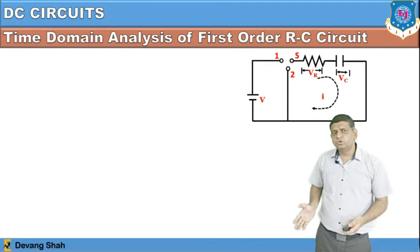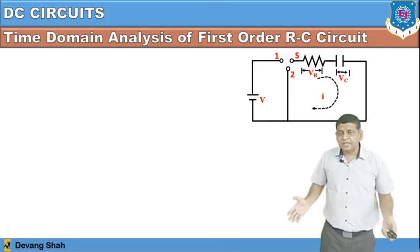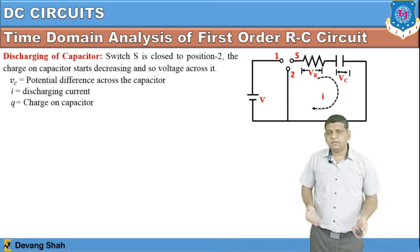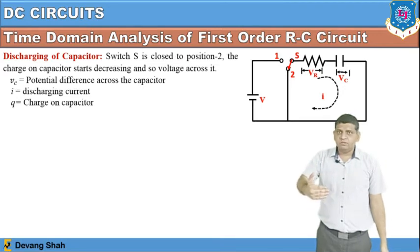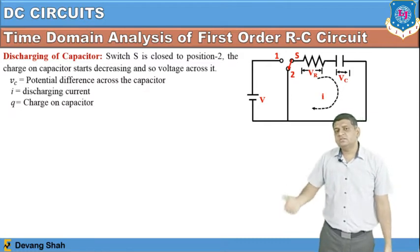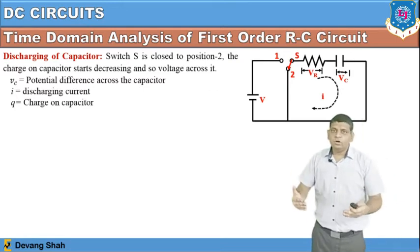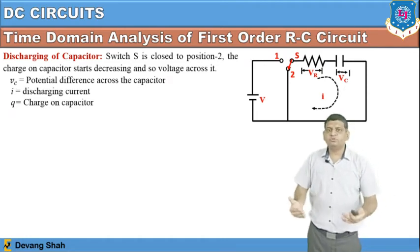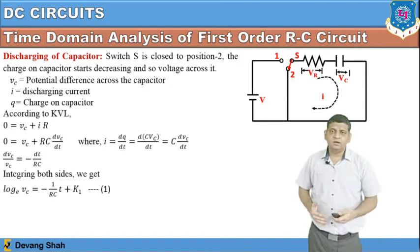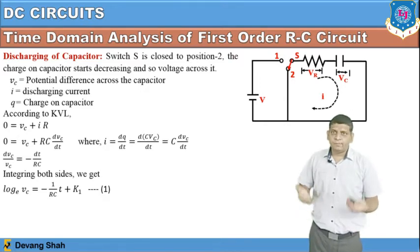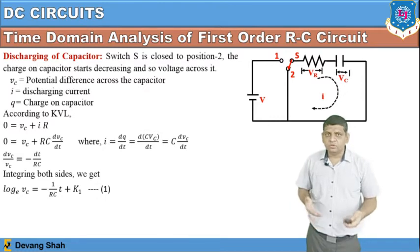Now, if the switch S is connected to position 2, the capacitor is going to discharge. In this condition, the battery V is removed from the circuit. The effective circuit is only the series combination of R and C, where the capacitor acts as a voltage source and starts discharging. Applying KVL in this loop gives: 0 = V_C + I·R, where I = C·(dV_C/dt).